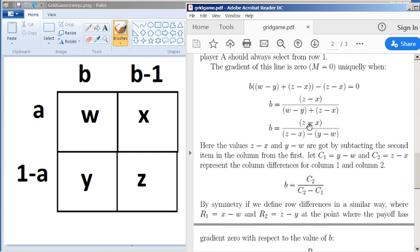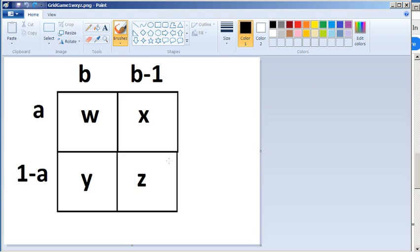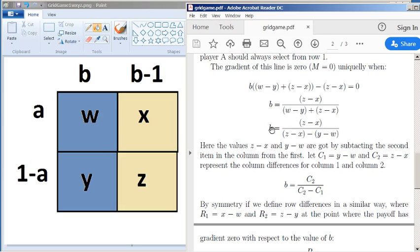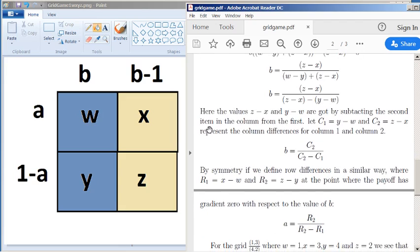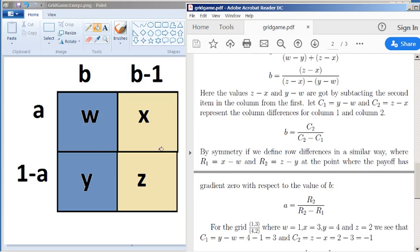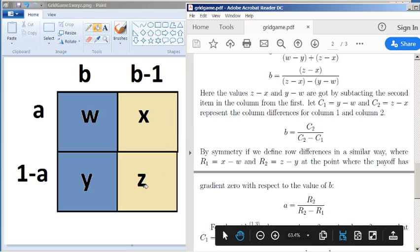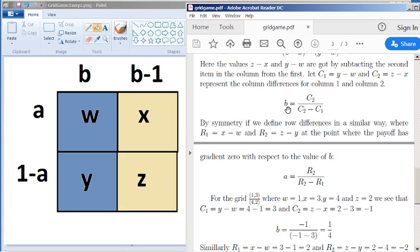And notice we've got everything in terms of z minus x and then we've also got y minus w in the final expression here. So if we actually just call these values c1 for y minus w, so that's the column difference for the first column, c1, and the column difference for the second column, c2, which is z minus x. Then we have a formula that the value of b, when this gradient is flat, is c2 over c2 minus c1.